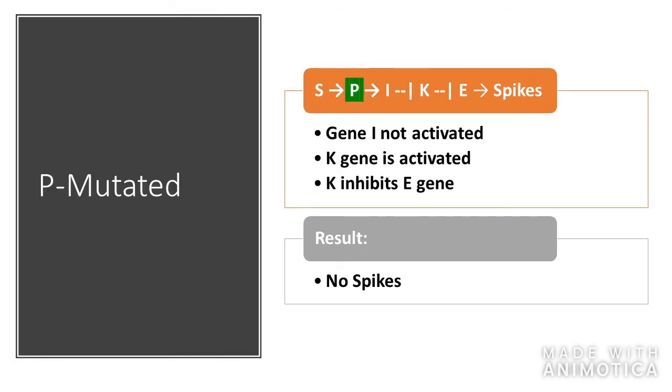For a P gene mutation, with the P gene not being there, the I gene is not activated, which leads to the K gene being activated. So K then inhibits the E gene, and therefore no spiky cells are made.